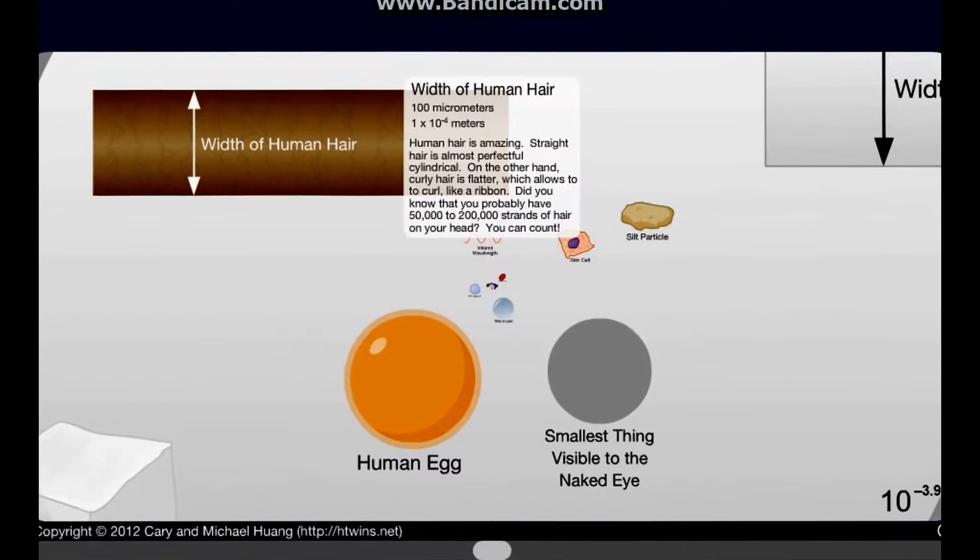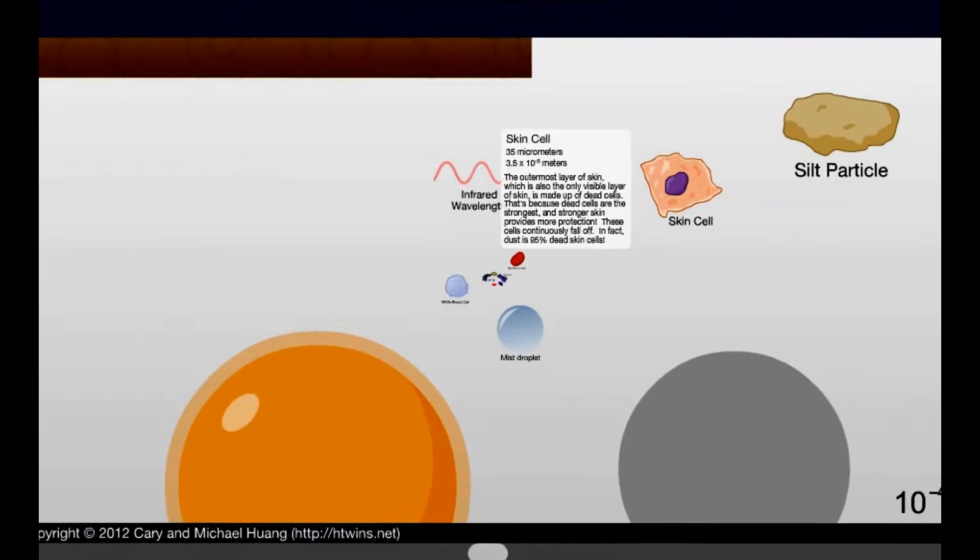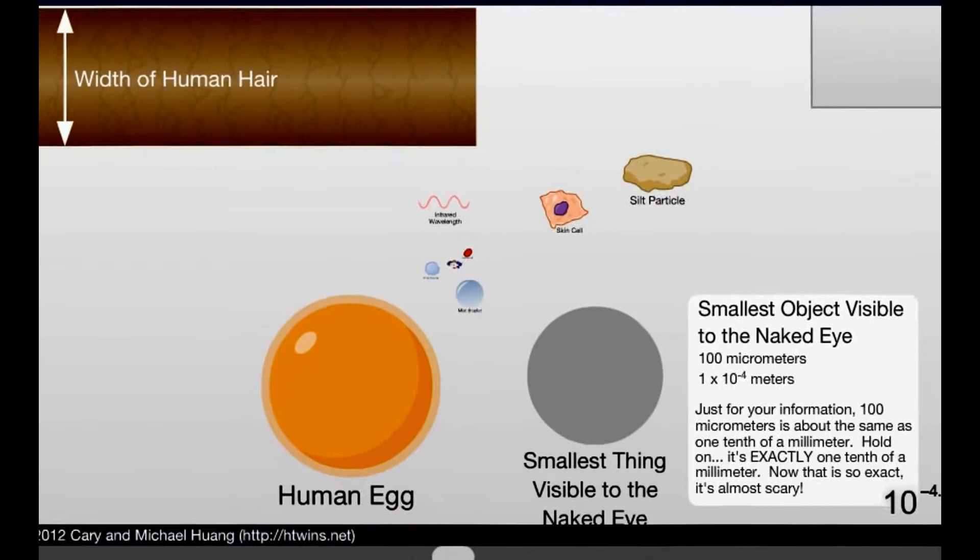Width of human hair. Really? Interesting. 100 micrometers. Human egg. A human egg is bigger than the width of a human hair? Smallest thing visible to the human eye. I can see that. But I know some people that can actually see skin cells. 35 micrometers.